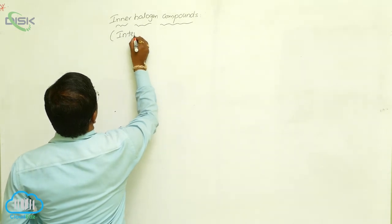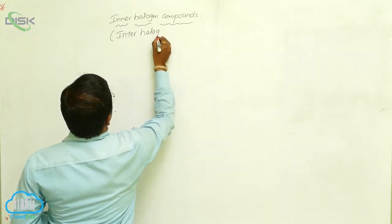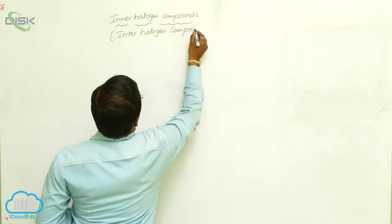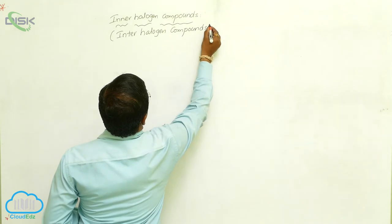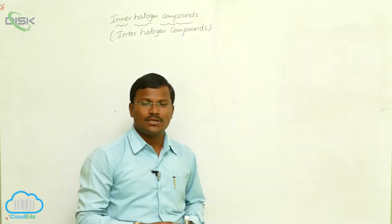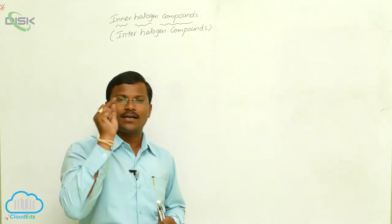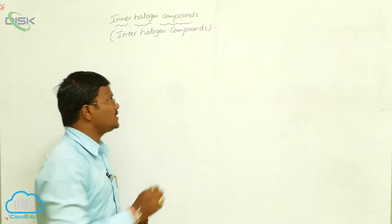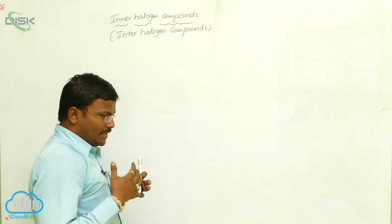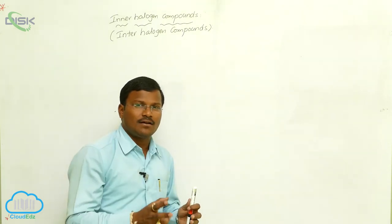They are also called Inter Halogen Compounds. When one halogen reacts with another type of halogen, the resulting compounds are called Inter Halogen Compounds. In Inter Halogen Compounds, the compounds only consist of two different types of halogens.